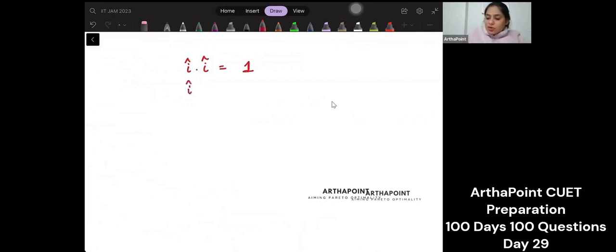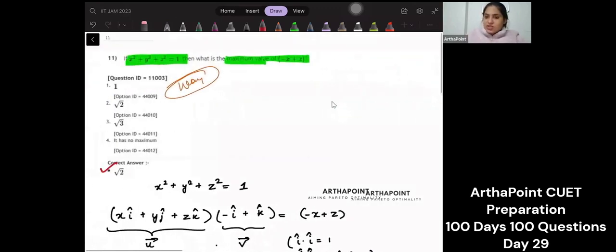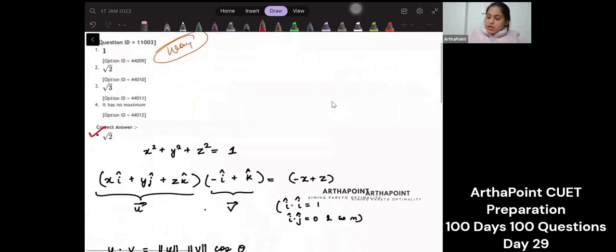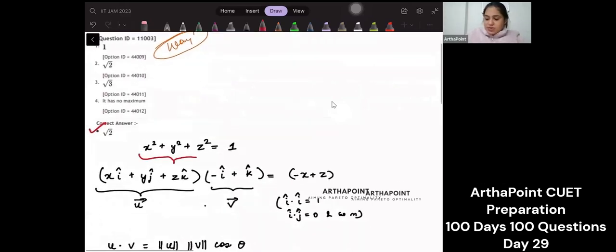But if I have two different vectors, just say i into j, its dot product will be 0. i into k, its dot product will be 0. So I have just tried to go ahead and divide this part.